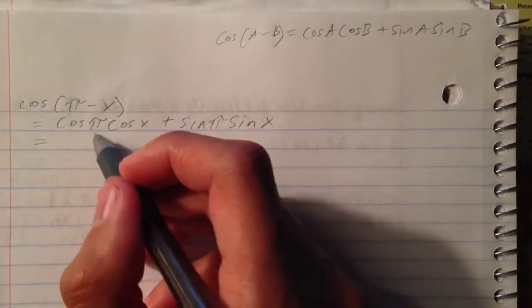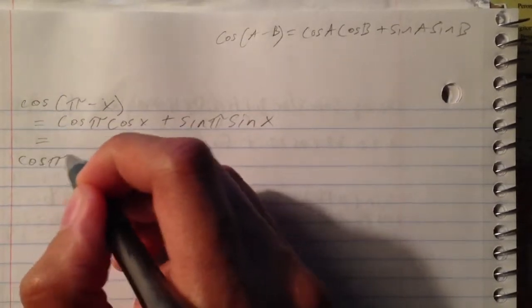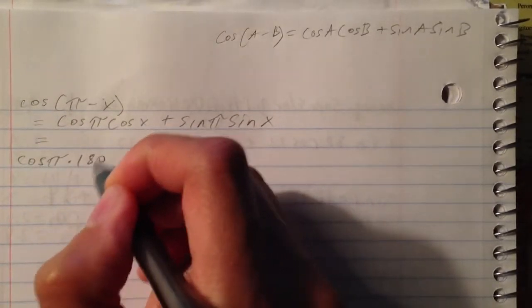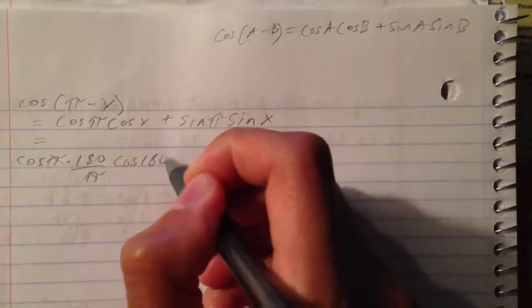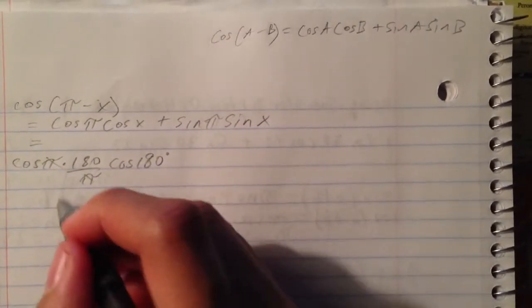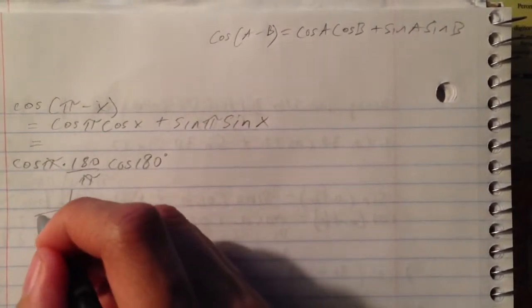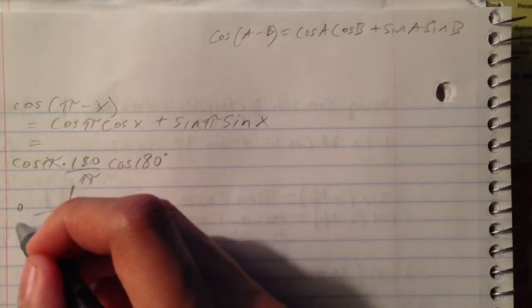Now we figure out what is cosine pi. Well, cosine pi you could figure that out in degrees. That's cosine 180, and 180 is a quadrant angle. So you know 180 would be here, and according to the unit circle, this is 0 for the y-axis and negative 1 for the x-axis.